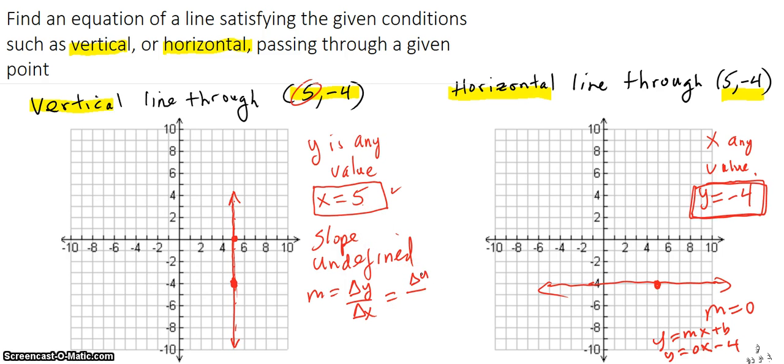So no matter what the change in y is, you get a 0 down here, and dividing by 0 is undefined. You could think of it later on as being kind of like an infinite slope—infinitely steep, straight up and straight down. But for us right now,